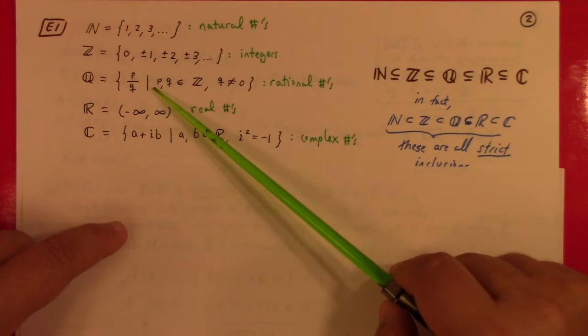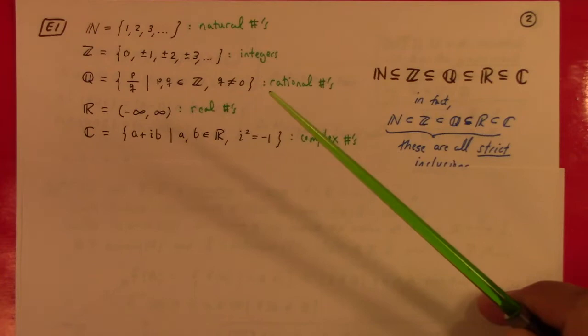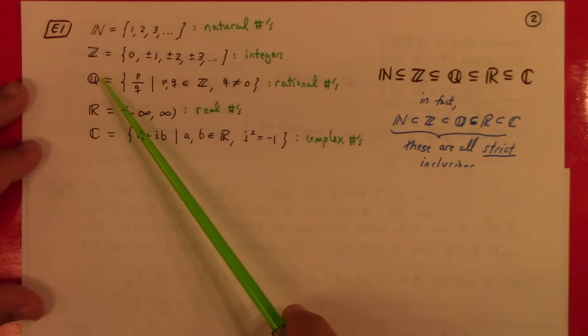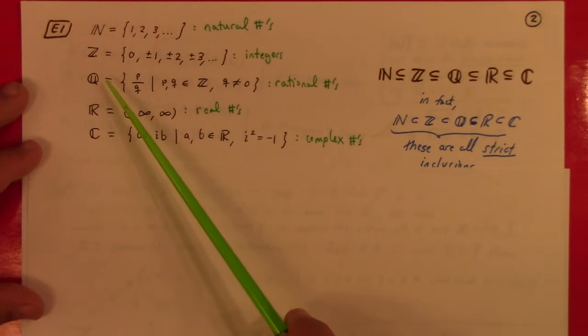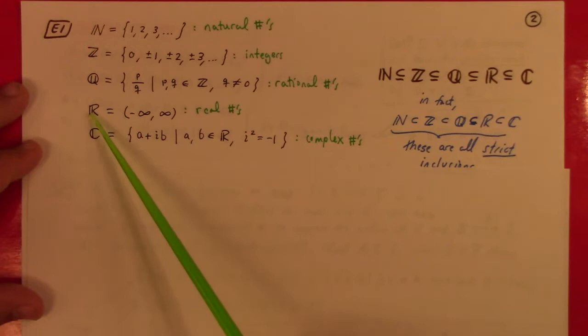Rational numbers are fractions of integers with non-zero denominators. Real numbers are the completion of the rational numbers, which is a technical and formidable construction that I'll gloss over here. There is a way to get from Q to R using analysis — either Dedekind cuts or adjoining limit points. Either way, completion of Q gives you R.